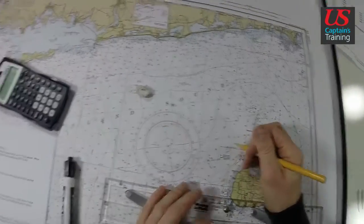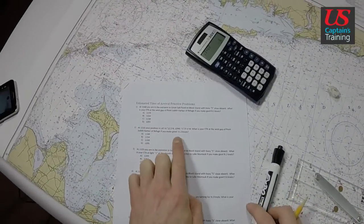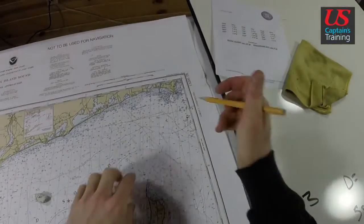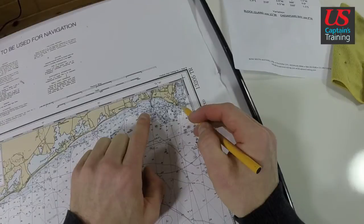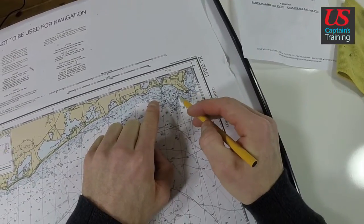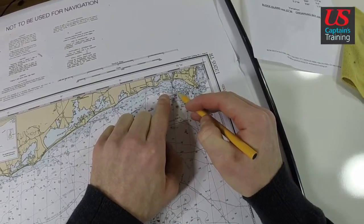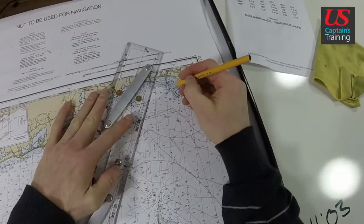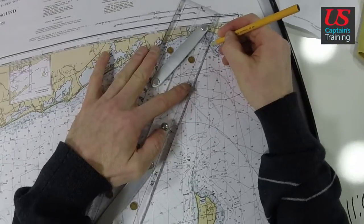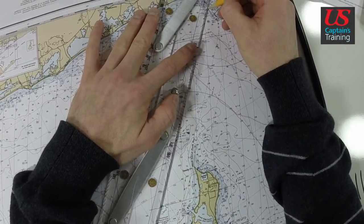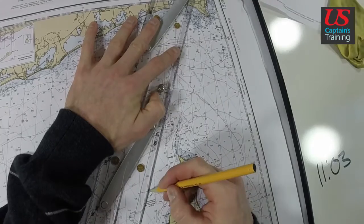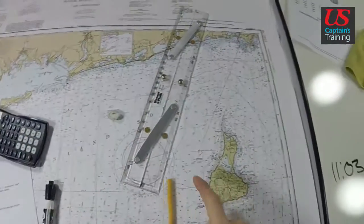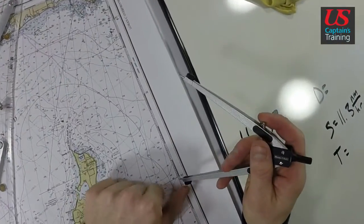From our starting point, it wants to know the ETA to the west gap of Point Judith harbor of refuge. Here's Point Judith — here's Point Judith light, here's the east gap, here's the west gap. So we're going to go right to this light. We'll draw it from our start to the west gap. That's where we're intending to go — how far is this is what we need to know.